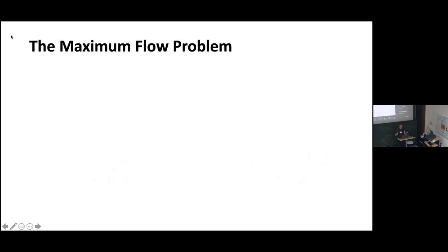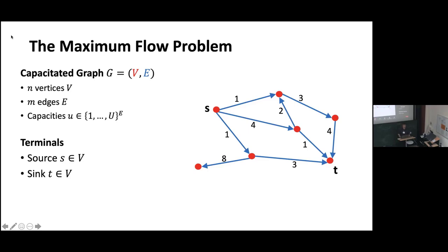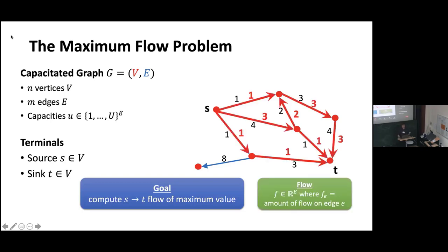Most of this talk will focus on the maximum flow problem, which Yang also presented on yesterday and was discussed this morning, so I'll be briefer in the introduction. We're given some graph G with N vertices and M edges, some integer capacities U between one and capital U, and two special vertices S and T. Our goal is to compute a maximum flow from S to T. A flow is a real-valued assignment of values to the edges specifying how much flow goes over every edge.